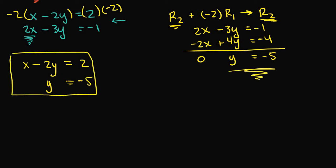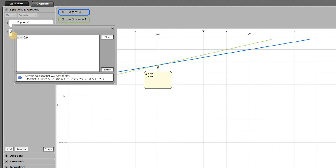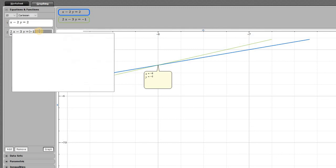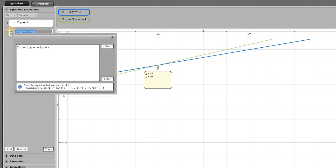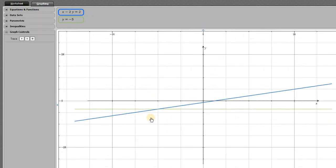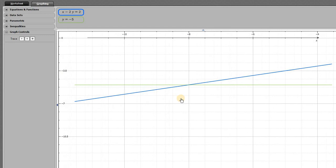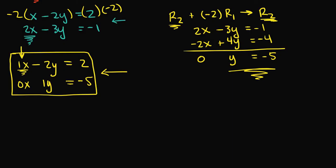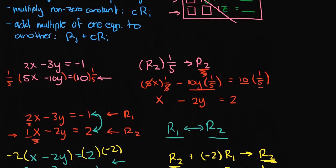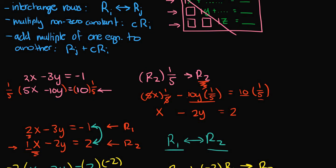Our new equivalent system is x minus 2y equals 2 and y equals negative 5. This is in row echelon form: each equation has a leading one term on the leftmost side, and each column has a zero term below each leading one. Graphing this on the software — entering x minus 2y equals 2 and y equals negative 5 — we again find x equals negative 8 and y equals negative 5. Every equivalent system has yielded the same solution set.